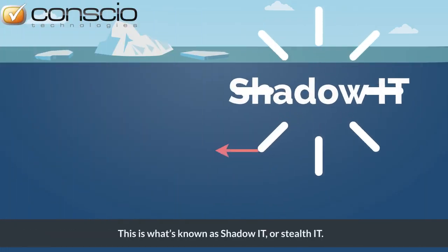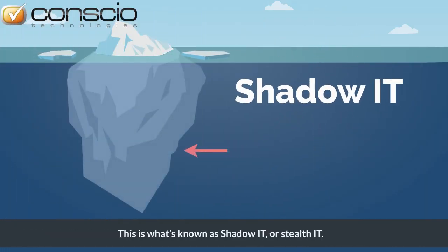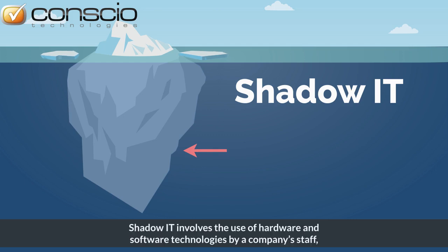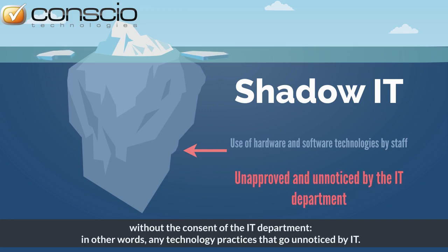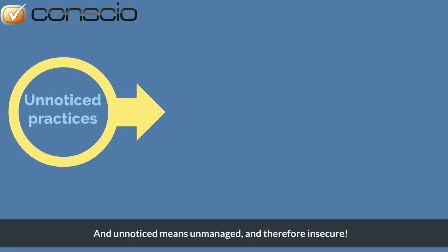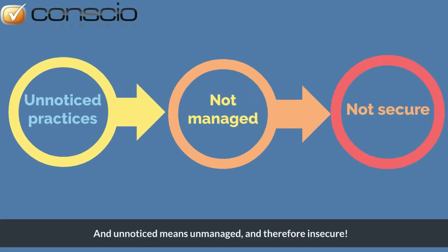This is what's known as Shadow IT or Stealth IT. Shadow IT involves the use of hardware and software technologies by a company's staff without the consent of the IT department. In other words, any technology practices that go unnoticed by IT. And unnoticed means unmanaged and therefore insecure.